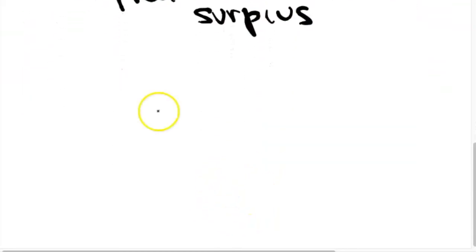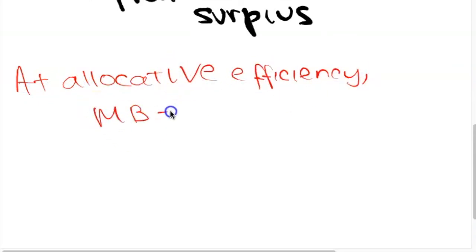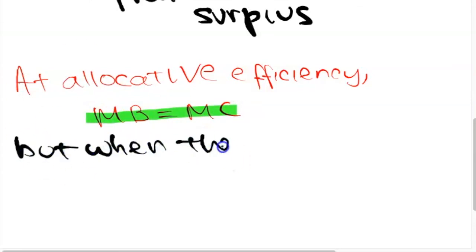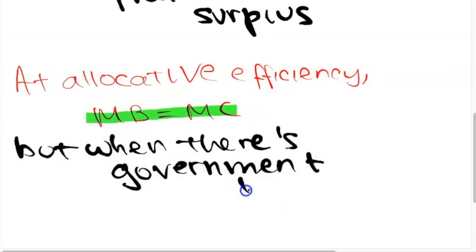We can also think of allocative efficiency as producing exactly what consumers want. It is also represented by the condition marginal benefit is equal to marginal cost, meaning that the benefit that the consumer gets from consuming one more unit of the good is exactly equal to the cost to the producer of producing one more unit of the good.